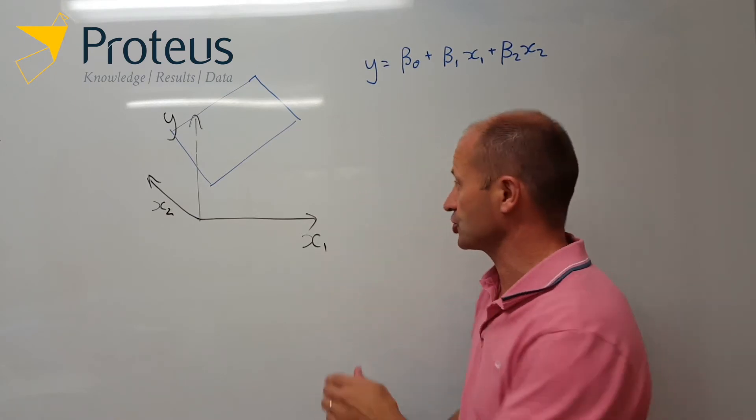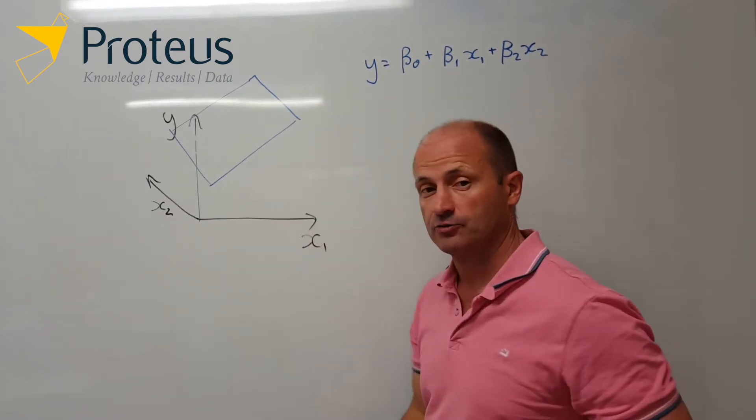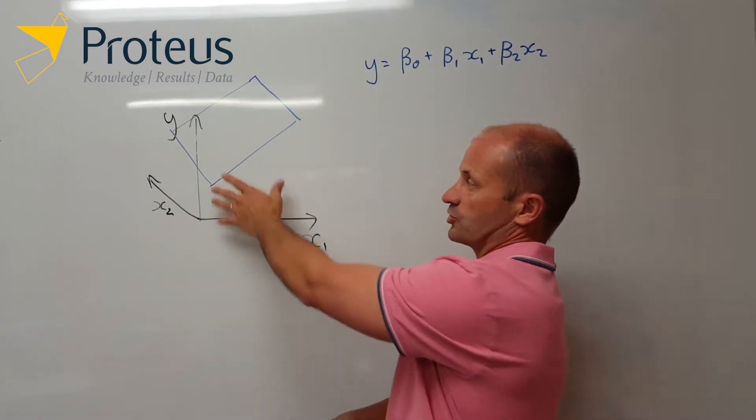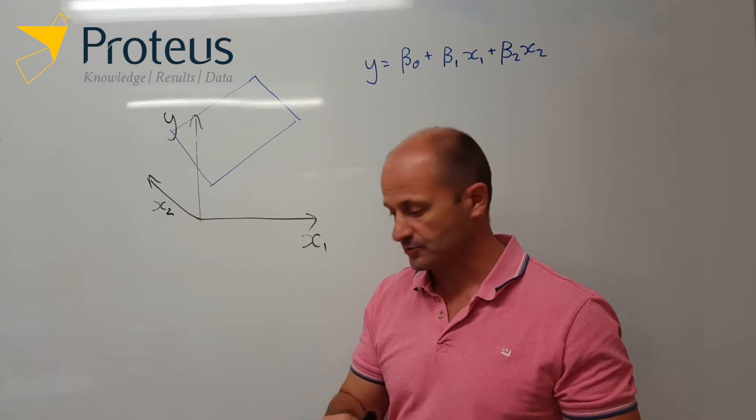So instead of having a regression line, like we started off with, when we have two continuous-valued covariates, what we have is a regression surface or some sort of plane.